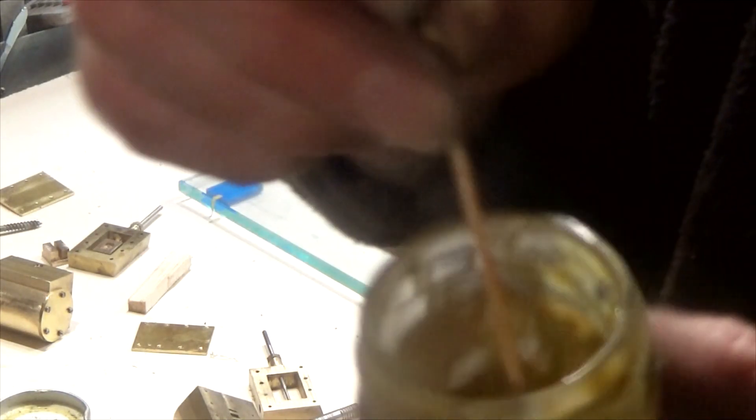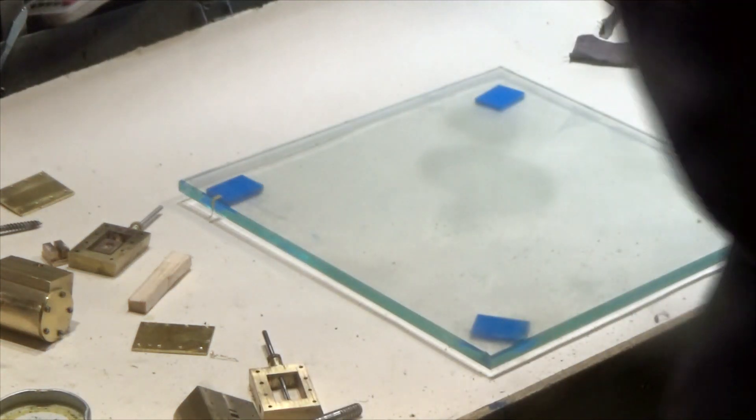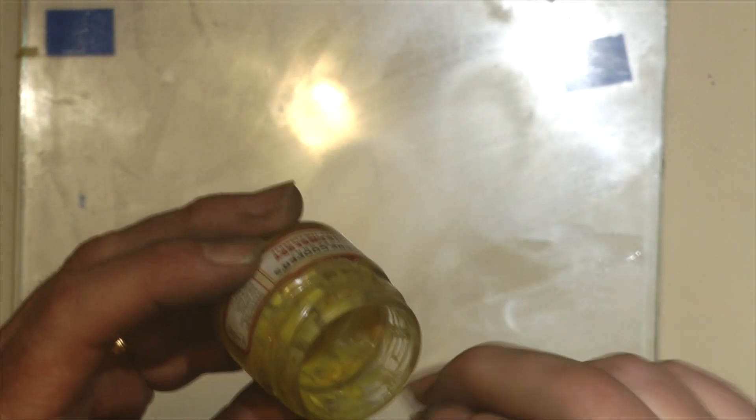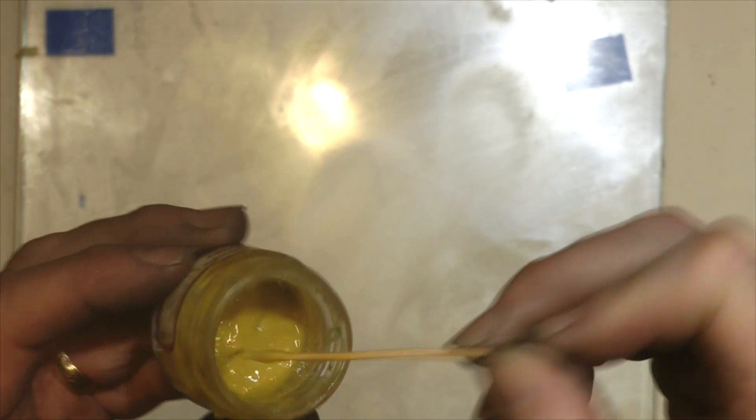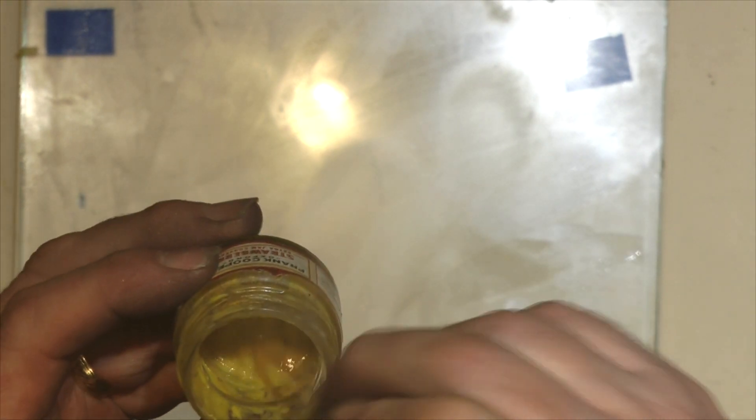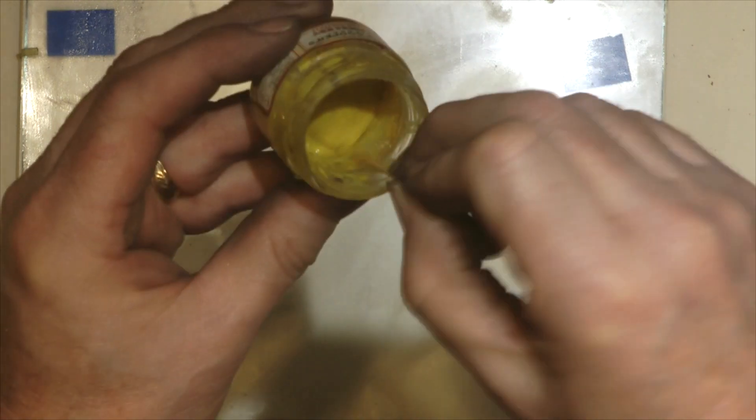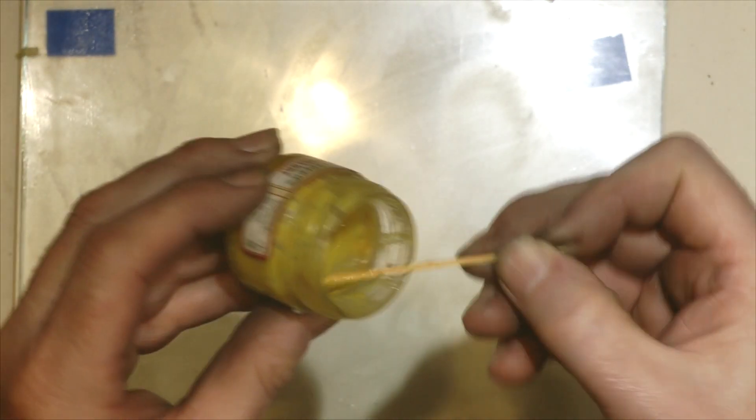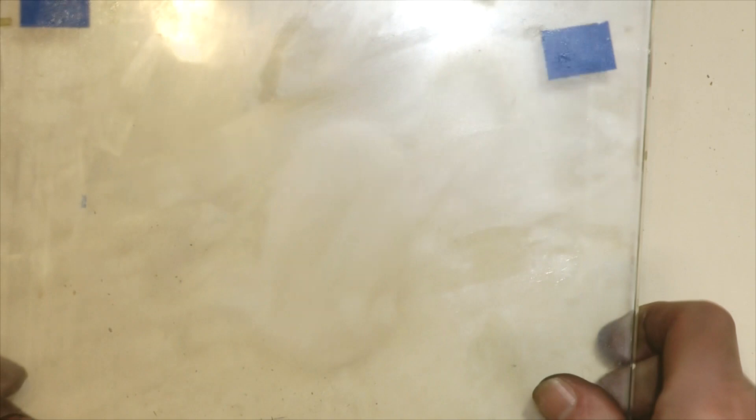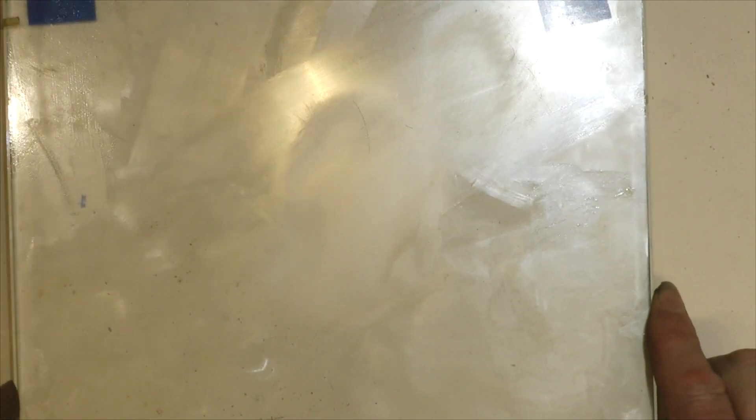This is the lapping paste we use. It comes in powder form and you mix it to the consistency of mustard. Just mix it with a little drop of oil and pop it down on the plate. The best thing for lapping is a piece of glass a quarter of an inch thick. This is a very smooth surface that we'll do our lapping against.